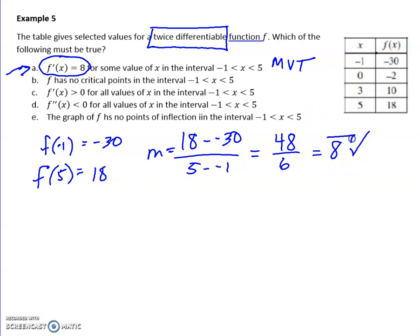Let's take a look, though, at why the others do not work. It says f has no critical points. Well, here's the problem. Because you only have four data points, you don't know if they're a critical point. So there might be, there might not be. But we definitely don't know. It must be true.